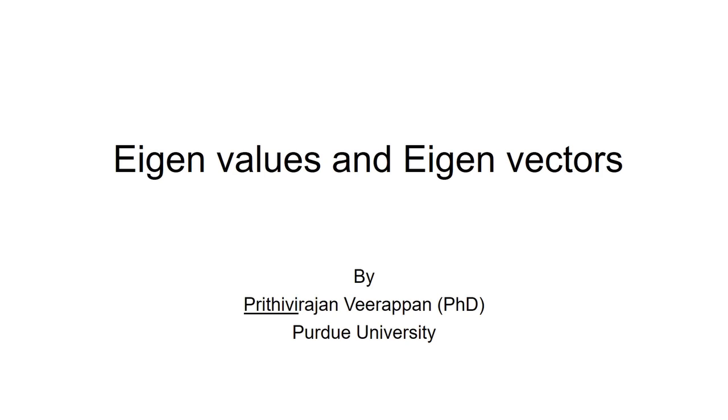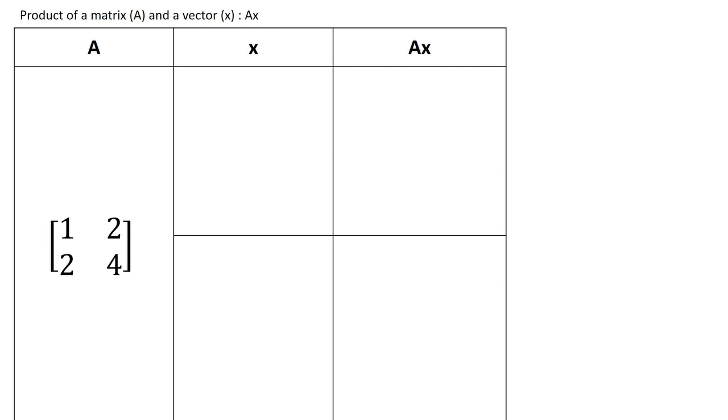Let me start with something simple and proceed to the explanation of eigenvalues and vectors. Let's first analyze the product of a matrix A and a vector X. Let me illustrate this with a simple example. I have taken A as a 2 by 2 matrix as shown and we shall consider two different cases for X.